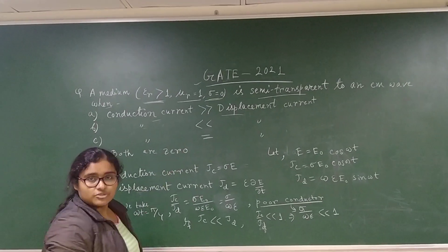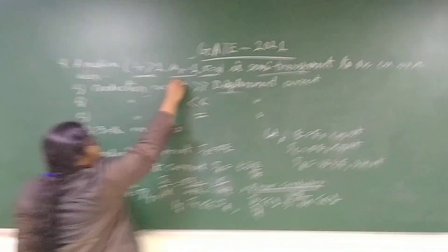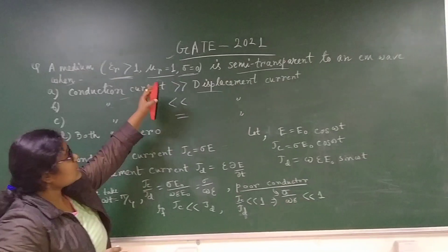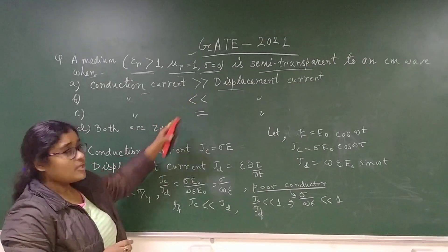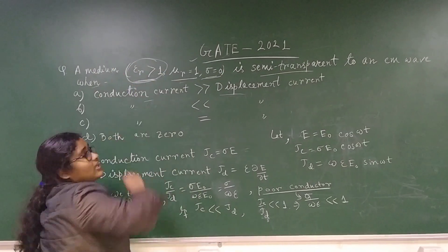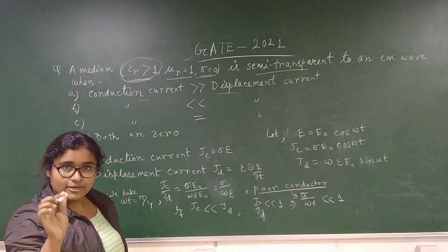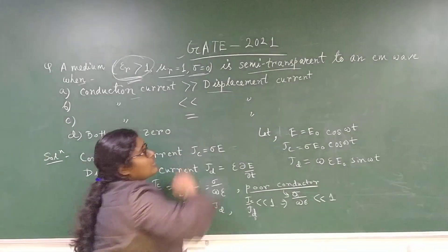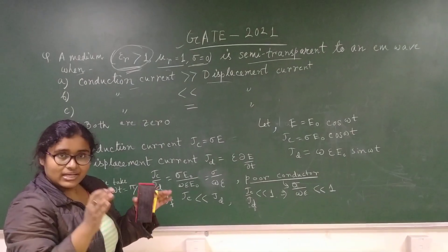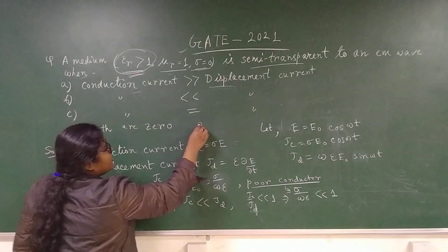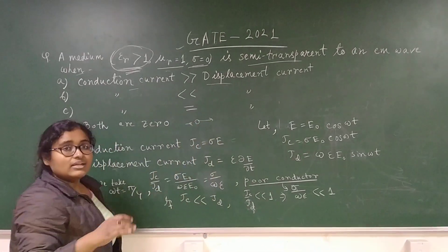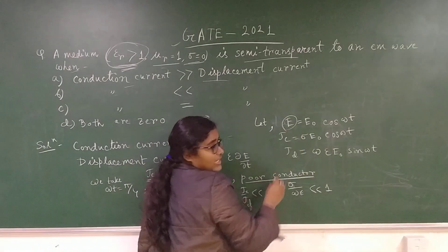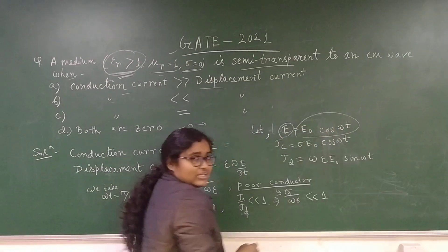But if you don't know or can't understand the logic or the physics behind these terms, look here. ε_r is nothing but the dielectric constant. The dielectric constant is related to the displacement current, because displacement current is the displacement of charges when there is a dynamic electric field. Suppose E equals E_naught cos(ωt).